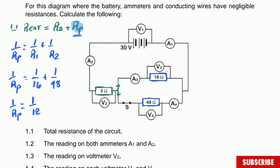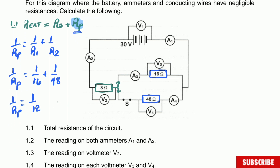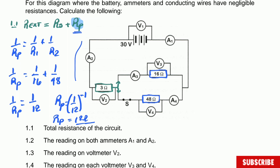Remember you raise it to the power of negative one, so R_parallel = (1/12)^(-1), which gives R_parallel = 12 ohms. Now substituting back, the total resistance is 3 + 12 = 15 ohms. That is the first answer for question 1.1 — very simple.